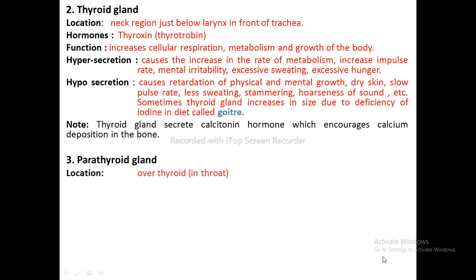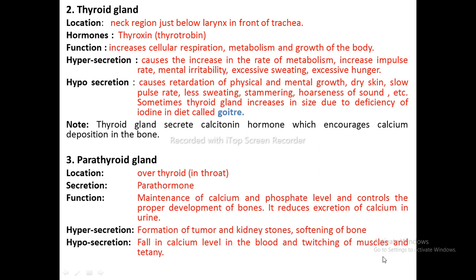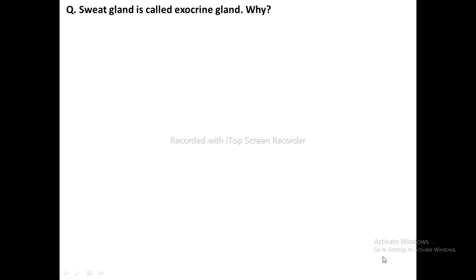Parathyroid Gland: Location — over the thyroid in the throat. Hormone — parathormone. Function — maintenance of calcium and phosphate levels, controls proper development of bones, and reduces excretion of calcium in urine. Hypersecretion causes formation of tumors, kidney stones, and softening of bones. Hyposecretion causes a fall in calcium level in blood and switching of muscles, known as tetany. Note: Sweat gland is called an exocrine gland because it secretes sweat with the help of a duct.